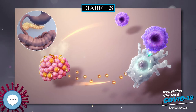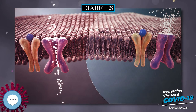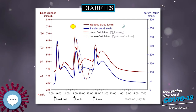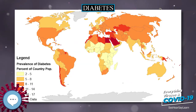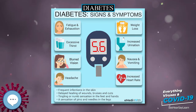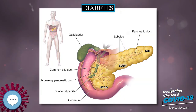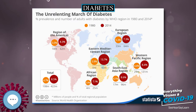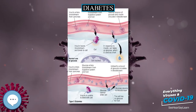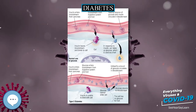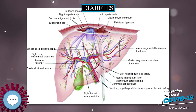Type 2 diabetes is characterized by insulin resistance, which may be combined with relatively reduced insulin secretion. The defective responsiveness of body tissues to insulin is believed to involve the insulin receptor. Type 2 diabetes is the most common type of diabetes mellitus. Many people with type 2 diabetes have evidence of pre-diabetes — impaired fasting glucose and/or impaired glucose tolerance — before meeting the criteria for type 2 diabetes. The progression of pre-diabetes to overt type 2 diabetes can be slowed or reversed by lifestyle changes or medications that improve insulin sensitivity or reduce the liver's glucose production.